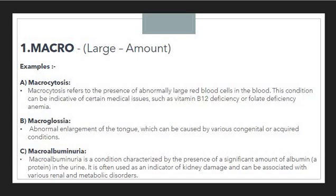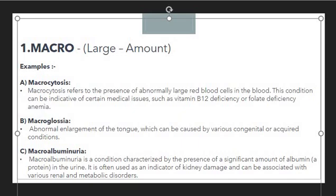The first example is macrocytosis. Macrocytosis refers to the presence of abnormally large red blood cells in the blood. You can see it is indicating a large amount — abnormally large red blood cells. Here macro is used as a prefix indicating large red blood cells. This condition can be indicative of certain medical issues such as vitamin B12 deficiency or folate deficiency anemia.